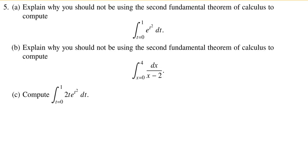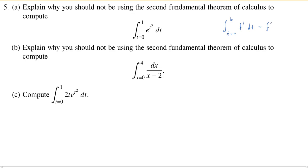Hello everybody. This is our video solution to problem five from the fall 2020 Math 210 final exam. This is a three-part problem about using the second fundamental theorem of calculus, also known as the net change theorem or the evaluation theorem. The idea is: if you are integrating from A to B a continuous function F prime with respect to T, continuous on the interval A to B, then you can compute this integral by finding an antiderivative F and looking at the net change of F between A and B.